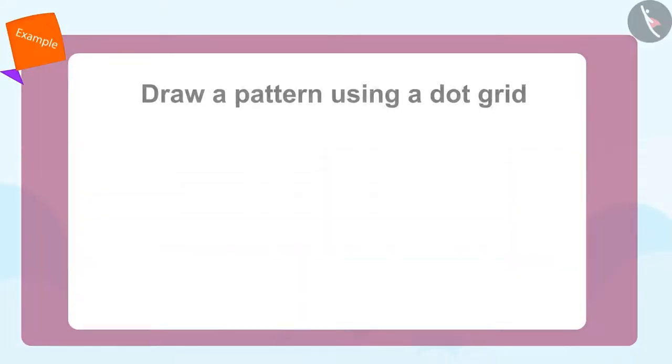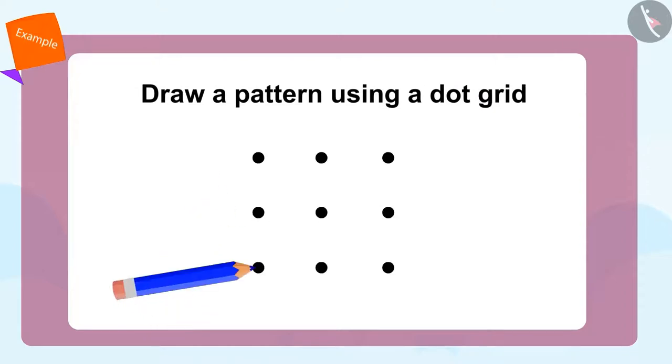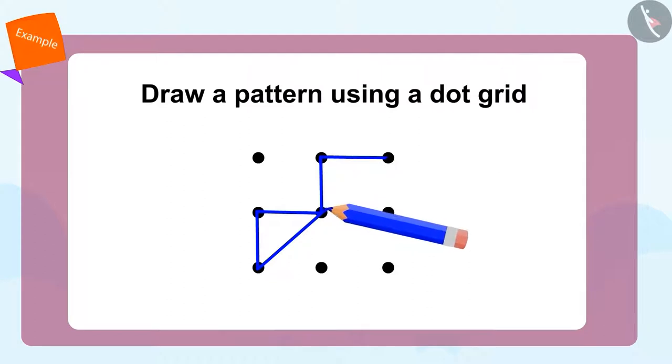First we will join these two dots and create a vertical line like this. Now we will draw a horizontal line from this dot, then we will join these two dots to make a slanting line. Then we will repeat the same method for another triangle and that's how we make our pattern using the dot grid.